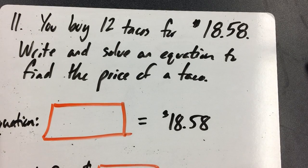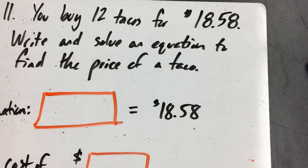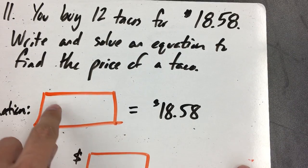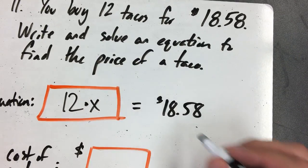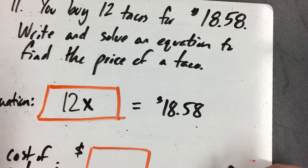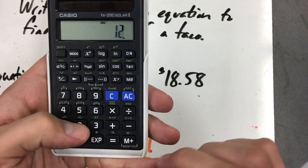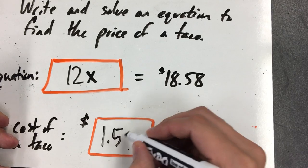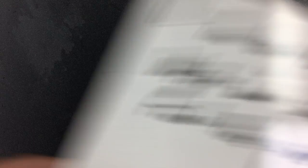Number 11 is a super easy word problem. It says you buy 12 tacos for $18.58 — write and solve an equation to find the price of one taco. The equation is 12x equals 18.58. Divide $18.58 by 12 to get your answer. Note: they already have the dollar sign displayed, so you do not need to type the dollar sign in the answer box.